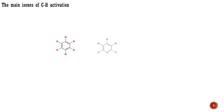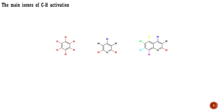For instance, in benzene, all CH bonds are equal. However, by changing one of the carbons to nitrogen, we get pyridine, which has three different types of CH bonds. Adding a benzene ring to pyridine gives us quinoline, in which all CH bonds are different. Similarly, in piperidine, we have three different types of CH bonds.